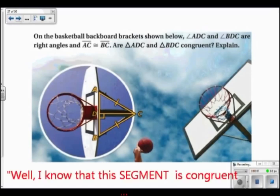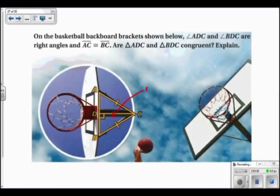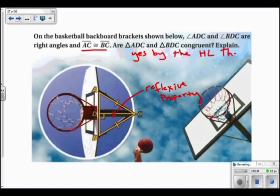Well, I know that this angle is congruent to itself by the reflexive property. Now, since these are both right triangles, and these two are hypotenuses of the triangles, and DC is congruent to itself by the reflexive property, then the answer is yes, by the hypotenuse leg theorem.